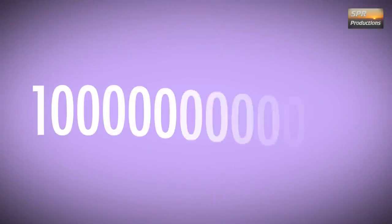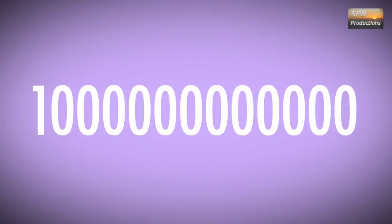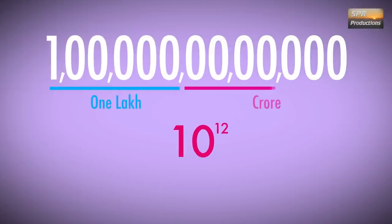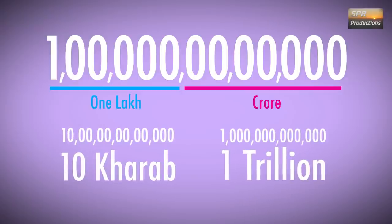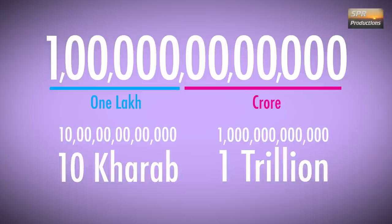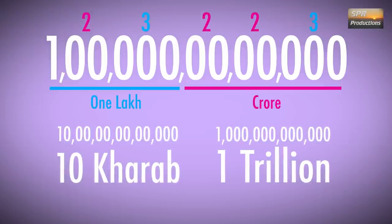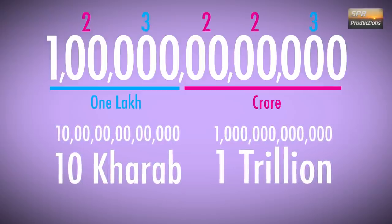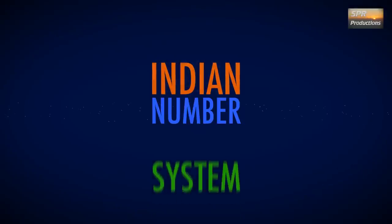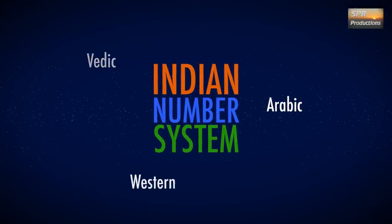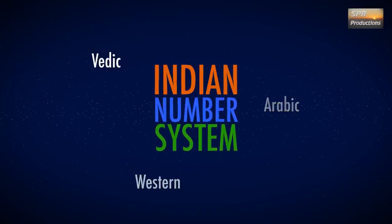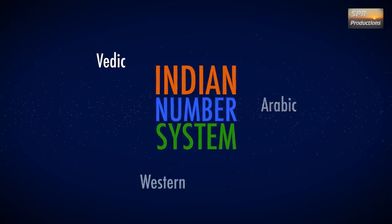For example, 10 followed by 12 zeros is referred to as 1 lakh crore. This is actually 10 Kharab in the Indian numbering system and 1 trillion in the Western system. Also note the inconsistent comma arrangement. What we have here then is a confusing hybrid between the Vedic, Arabic and Western numbering systems, which leads to complicated large number conversions and calculations.